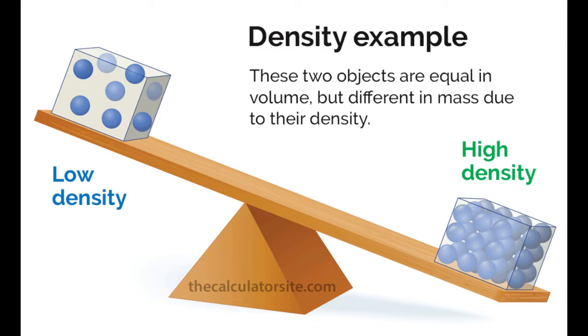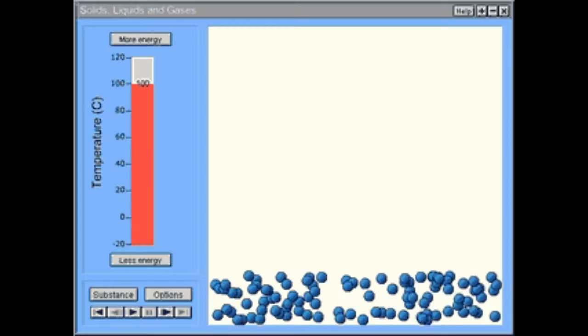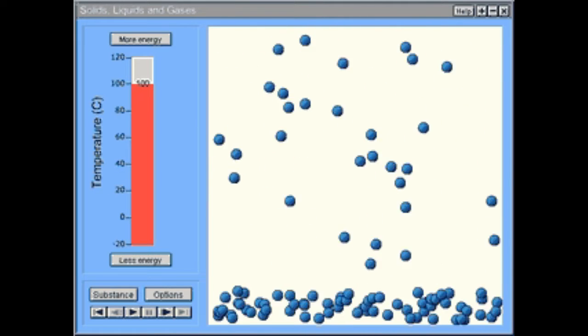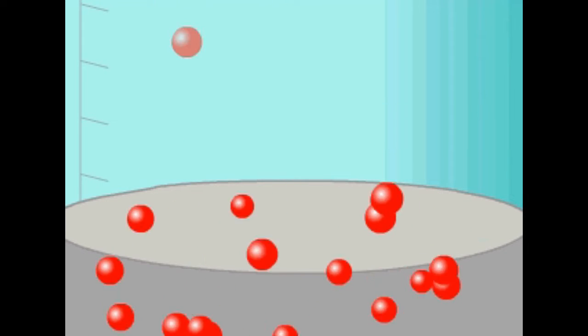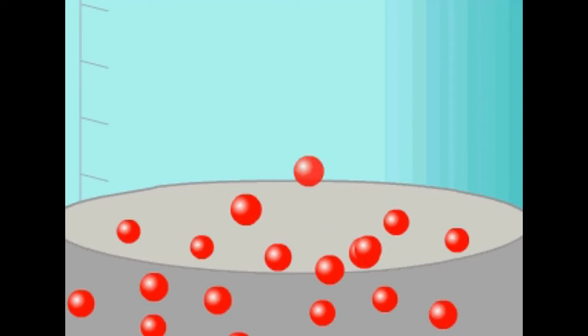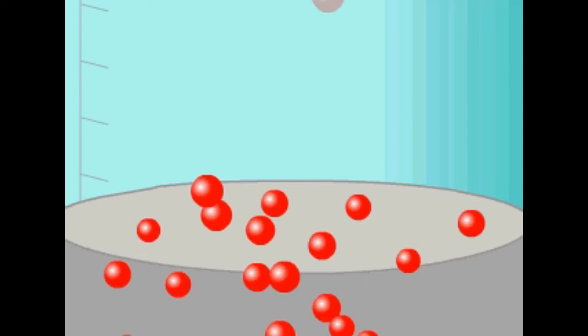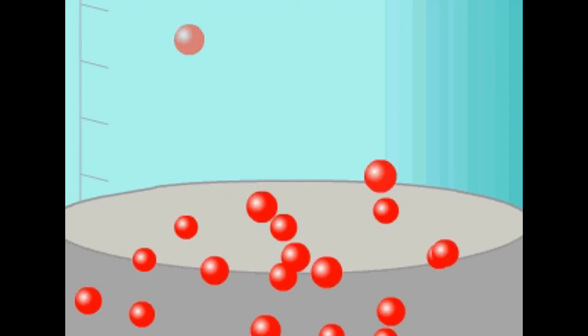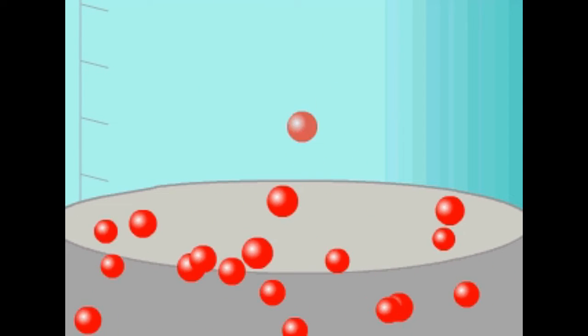Density refers to the compactness of molecules. If those molecules are heated, there is increase in temperature. They gain energy and move, allowing the area to expand. With this, the gas or liquid becomes less dense than its original condition. It's lighter so it would move up.